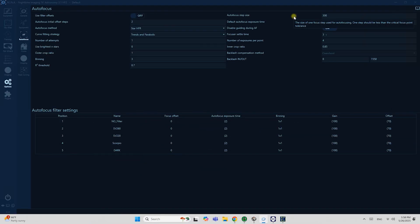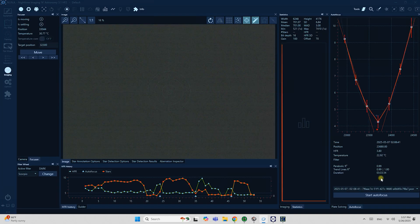I also want to share with you my autofocus settings that I have in Nina. First of all, as you can see I have this huge parameter for my backlash set, and the step size is set to 300, which is much larger compared to what I usually have when using Crayford style focusers. These are the results of my autofocusing routine and the parabola seems to be pretty good actually.